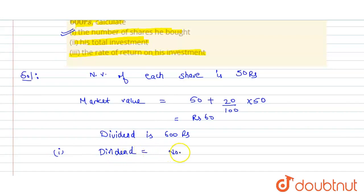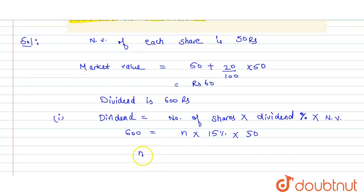Number of shares multiplied by dividend percentage multiplied by NV. So here we have dividend is 600, let number of shares be n, dividend percent is 15%, and NV is 50.